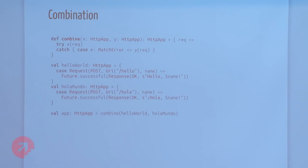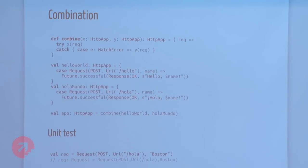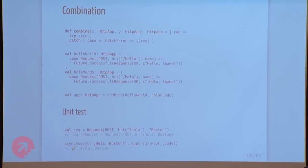Another thing we often want to do is combine applications — maybe you've got a lot of routes and want to divide them up conceptually, or maybe you've got a standard health check endpoint you want to compose onto all your services throughout your company. But the signature we have right now is kind of hostile to that. The best we can do is drop wildcard cases and have a combine function that calls the first service, and if it throws a match error, calls the second service. It works, but this is based on catching an exception for control flow that isn't even documented anywhere — it's a bad solution.